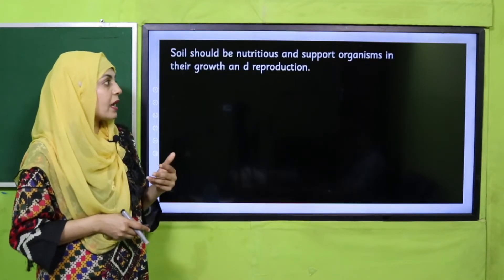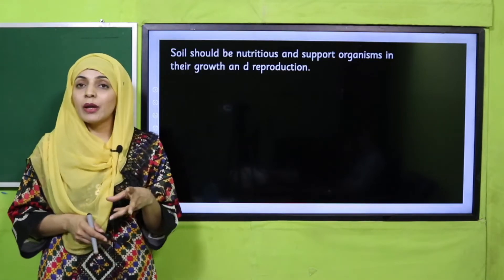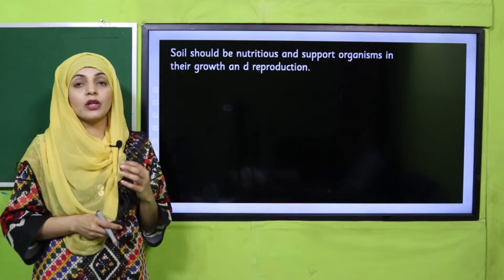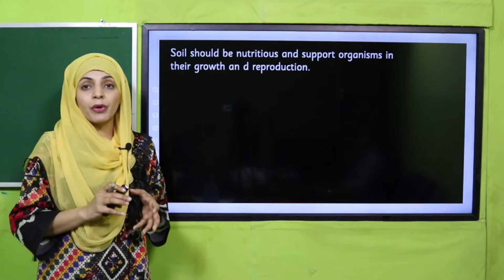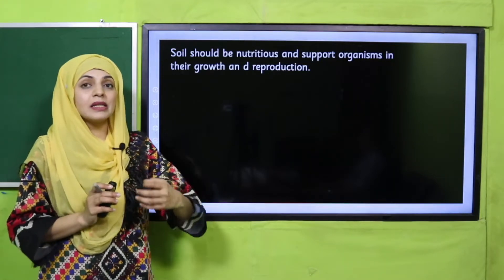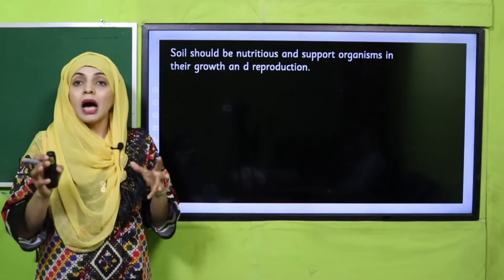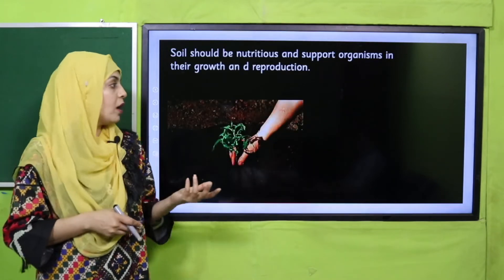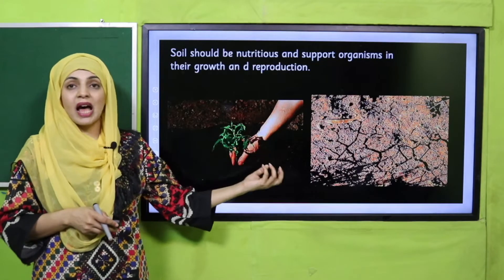Soil should be nutritious and support organisms in their growth and reproduction. Plants grow better in loamy and clay soil because there are proper nutrients, water, and minerals. Animals and plants living in such soils grow better and there is a more balanced ecosystem. Otherwise, plants will not grow properly — as in sandy soil — and the ecosystem will not be balanced.